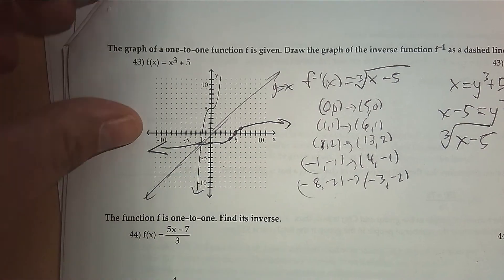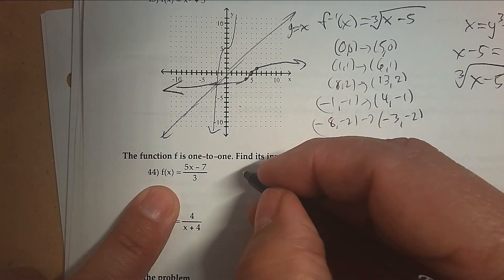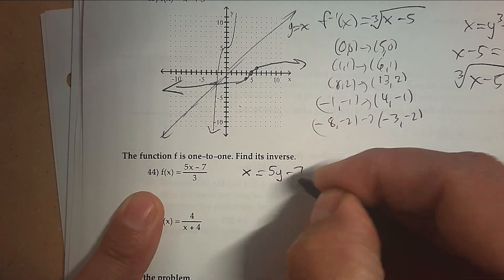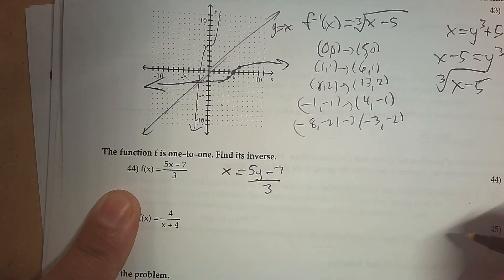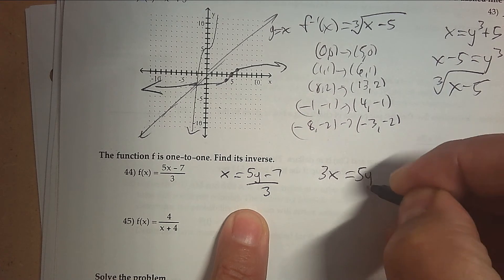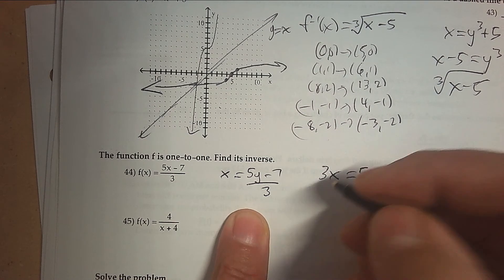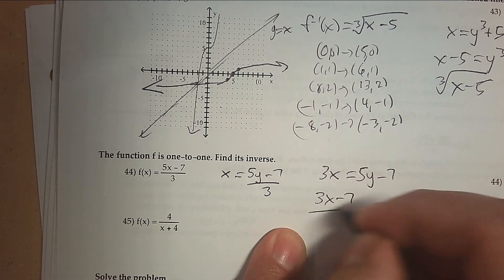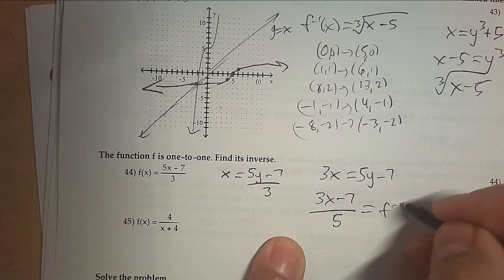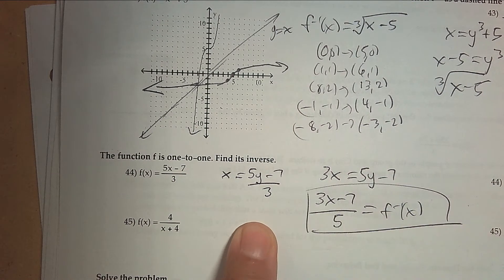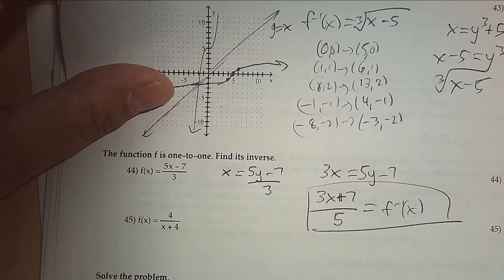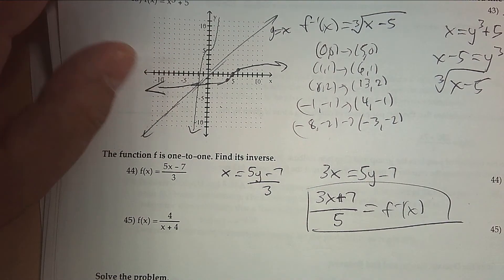Number 44: can you find the inverse? We're going to write x = (5y − 7) / 3. How would I get y by itself? Multiply by 3. Then add 7 and divide by 5 to find the inverse. That's the symbol for inverse.